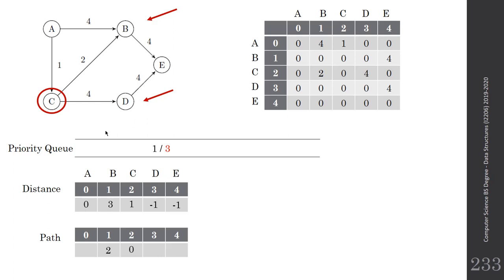From C we have neighbors B and D. The distance to B is now distance to C (1) plus 2, which equals 3. We update B's distance, path, and priority queue entry. For D, the distance equals distance to C plus 4, which is 1 plus 4 equals 5. We update the path and enqueue D in the priority queue.